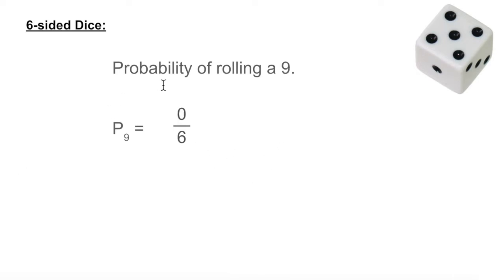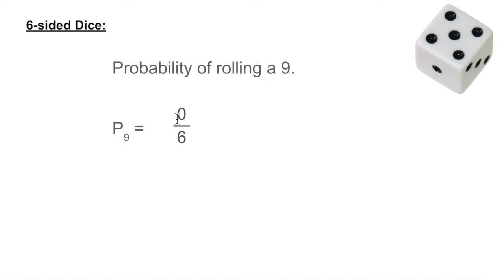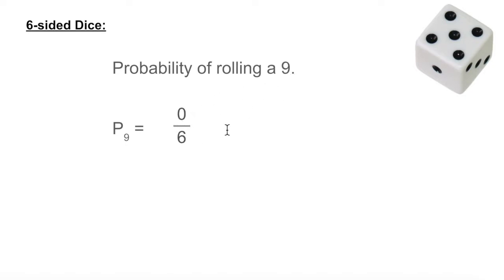What is the probability of rolling a 9 on a six-sided die? There are six possible outcomes on the die: one, two, three, four, five, six. How many nines are on the die? Zero. So the probability of rolling a 9 is 0 over 6, or just 0.